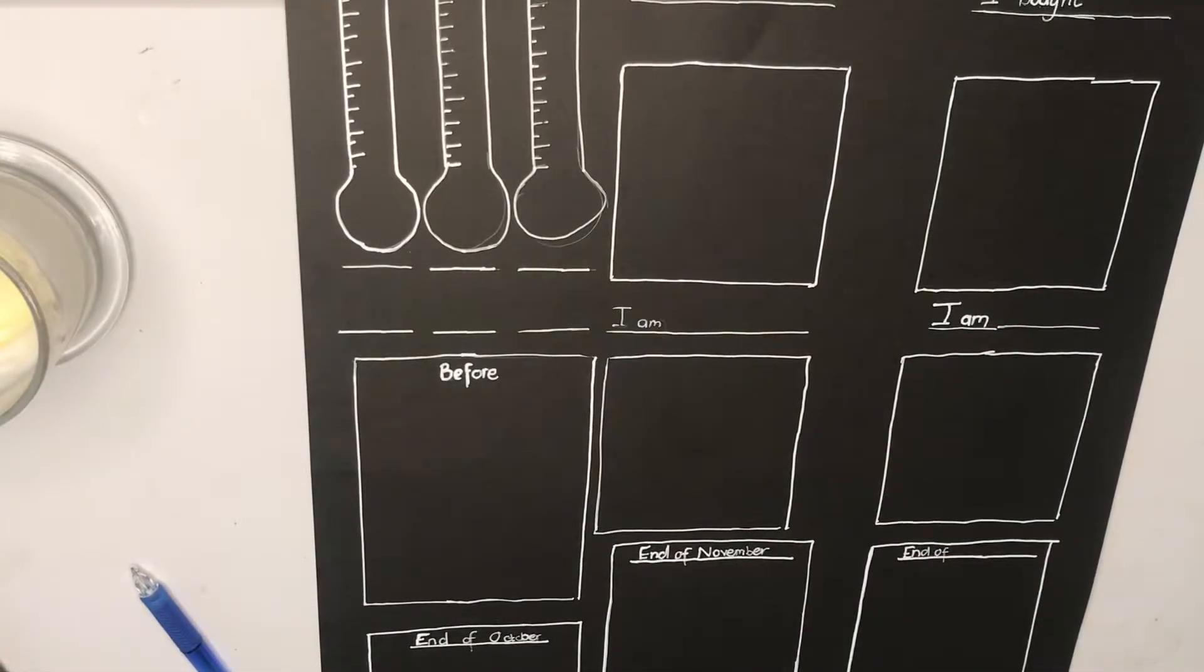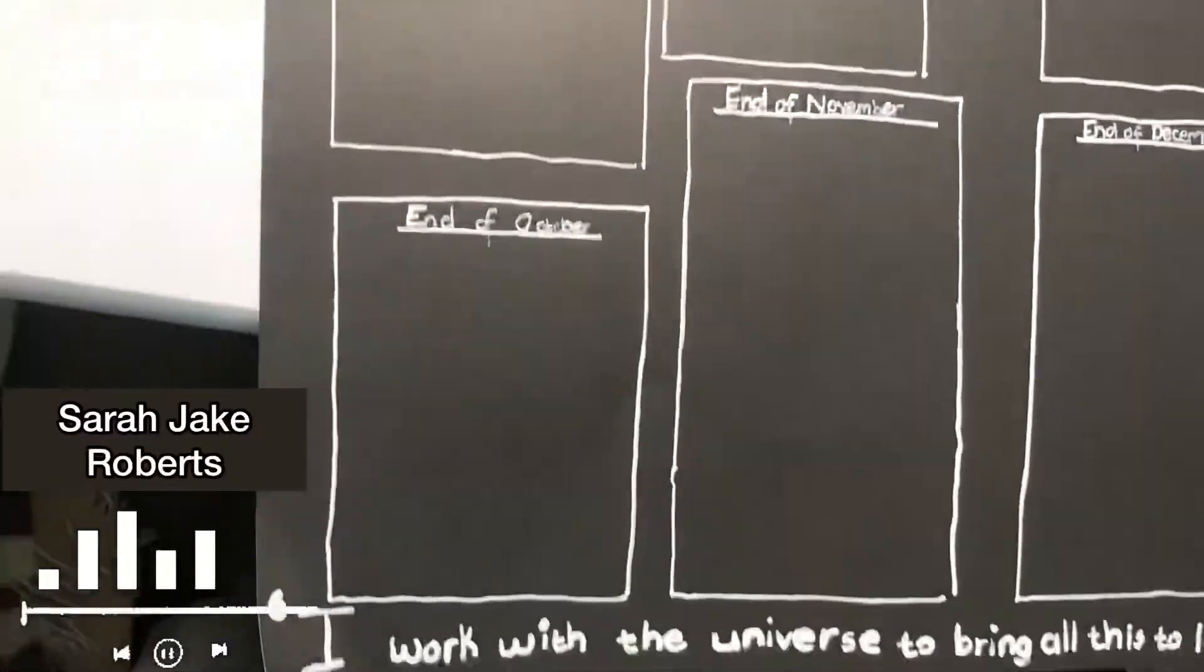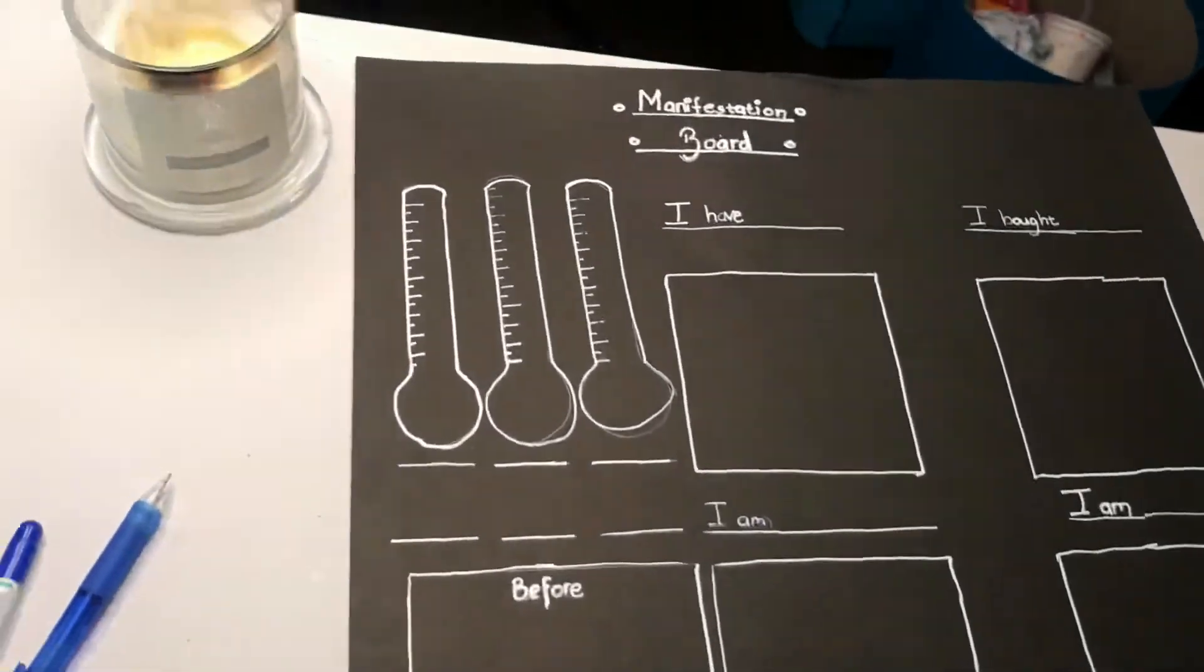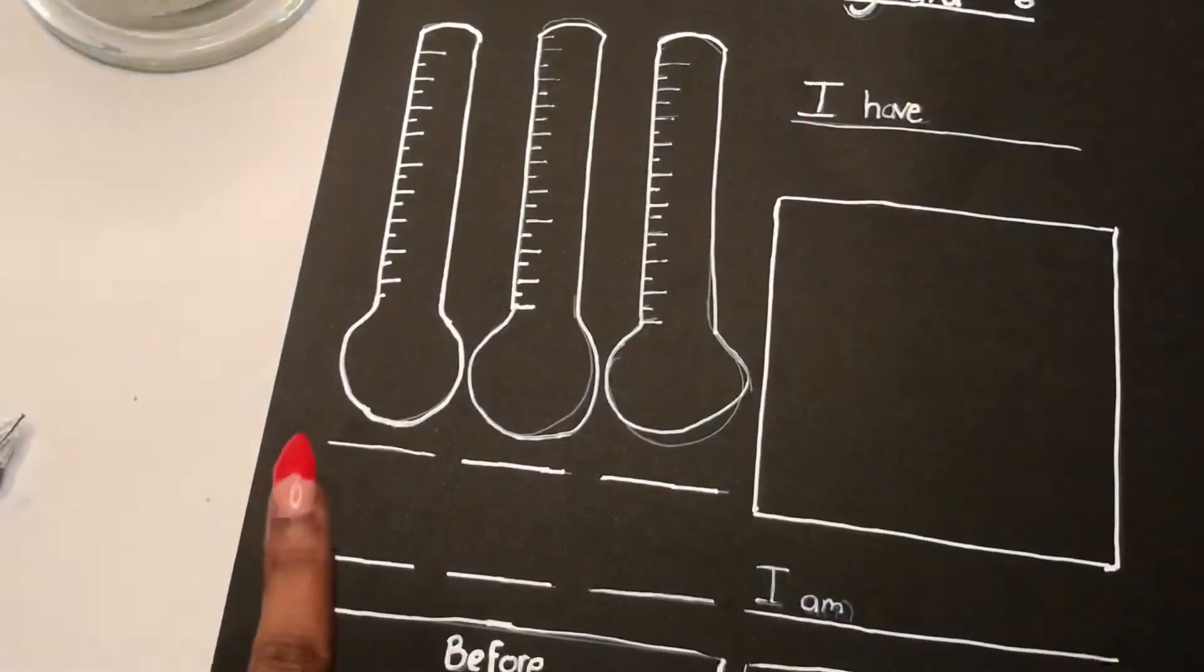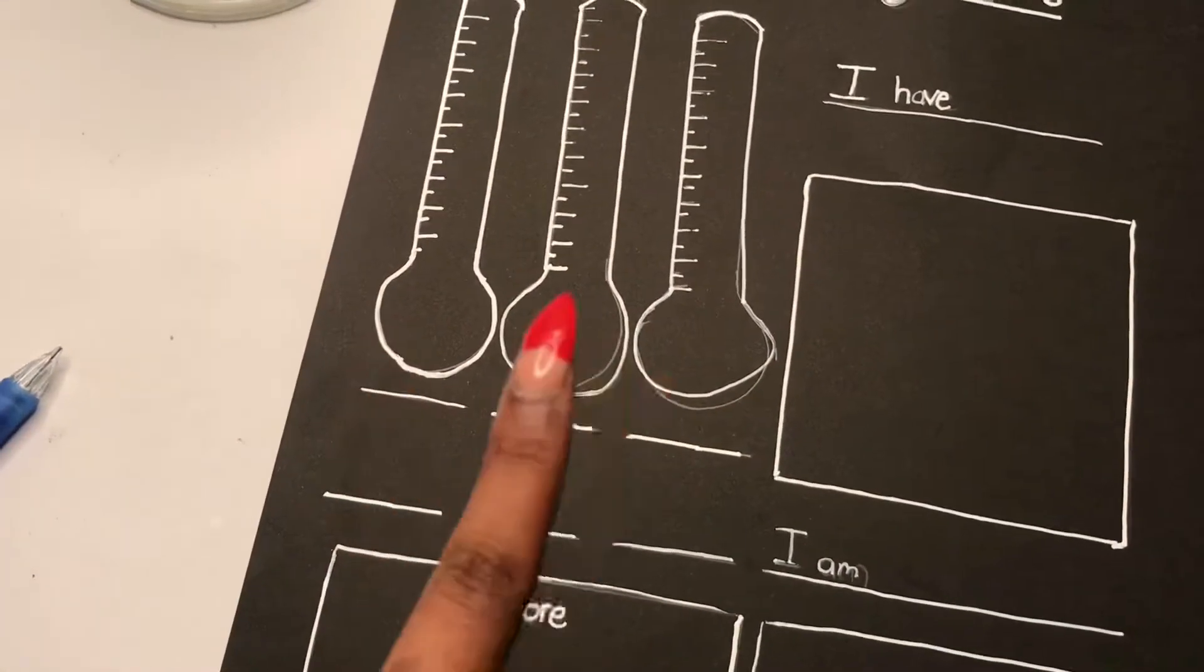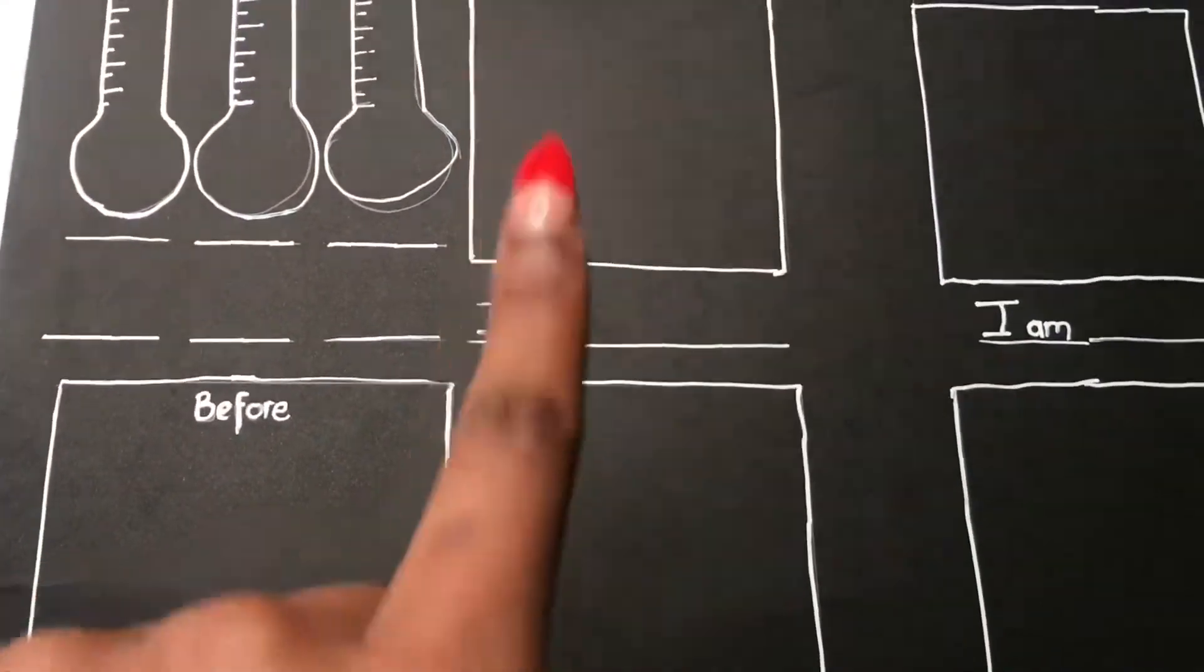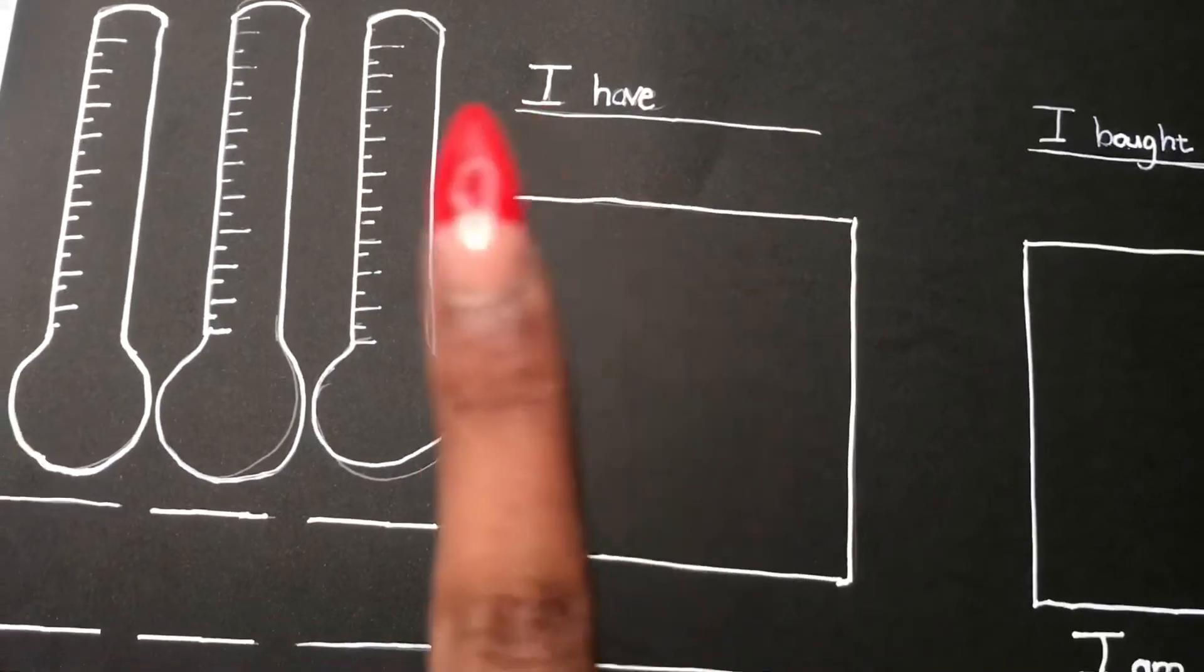Okay, so I'm all done and this is how it looks. So basically over here is my money thermometers of the three things that I want to save up for, and over here is basically just visualizations, specifically the things that I want to save up for.